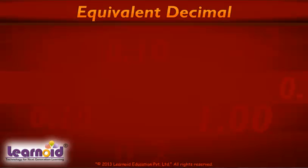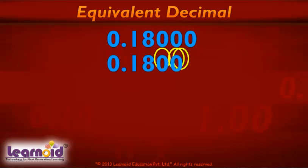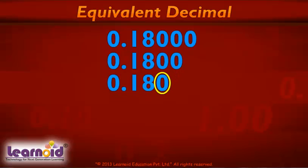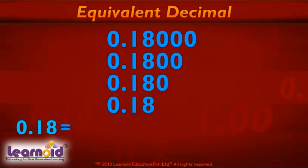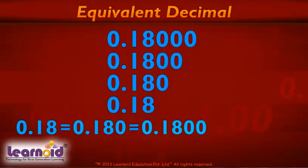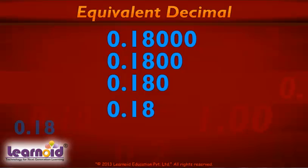To check equivalent decimals, remove all zeros from the right side until you get a non-zero number, and then compare. For example, in 0.18000, remove the three zeros from the right side to get 0.18.